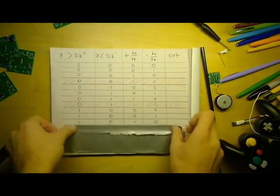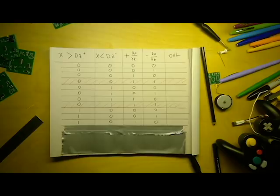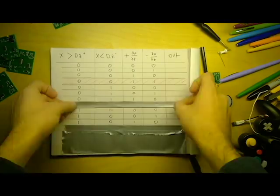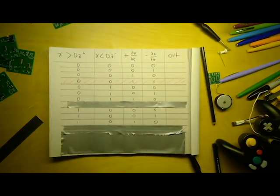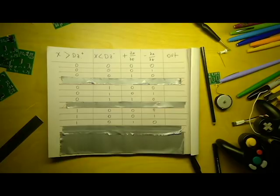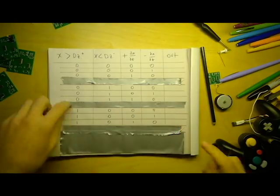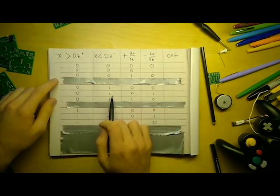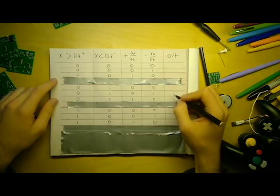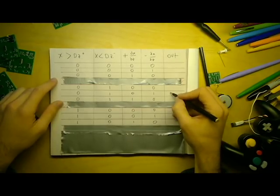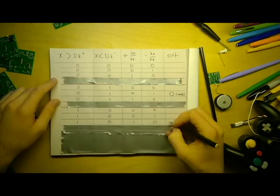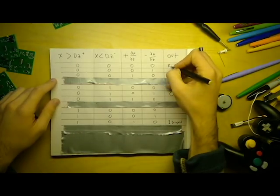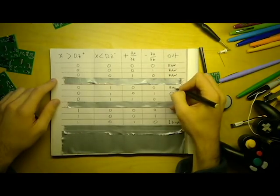And it's also impossible for our derivative to be positive and negative at the same time, so we can eliminate anything that has a 1 in both of those columns. Now we have something that's much more manageable to work with, and we're still really only looking for two cases. We're looking for when the position and the derivative are positive, and when the position and the derivative are negative. In every other case, we're just going to pass the raw signal.